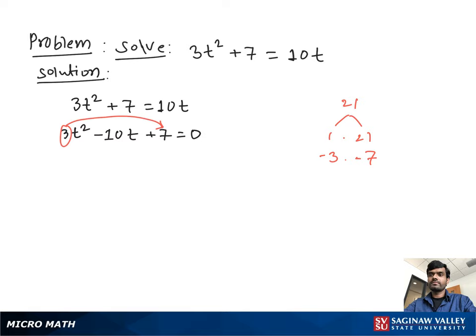If we put negative signs in front of 3 and 7, that gives us 21 on multiplication and -10 on addition. So we write 3t² - 3t - 7t + 7 = 0.